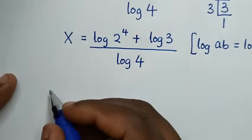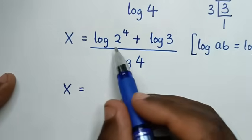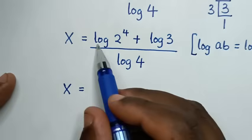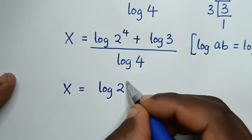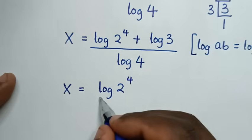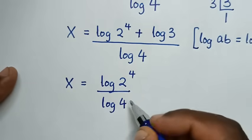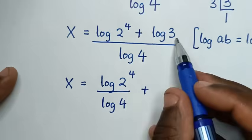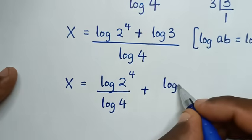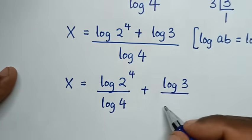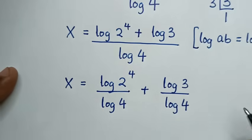In the next step, x is equal to — we divide log of 4 into each part — so it will be log of 2 power 4 over log of 4, plus log of 3 over log of 4.